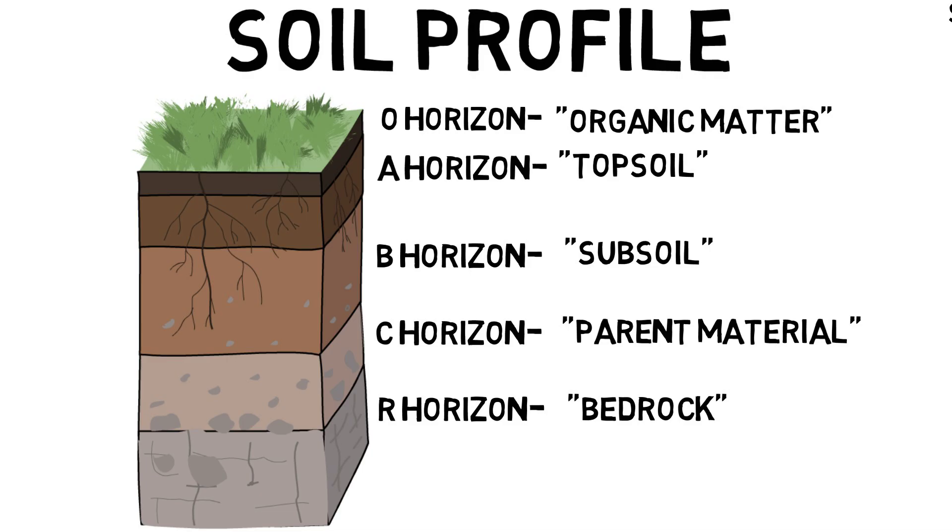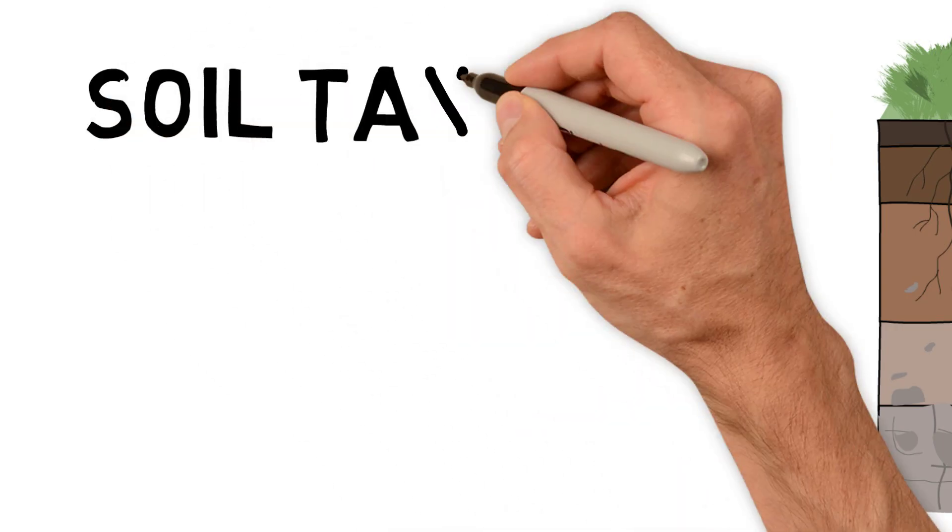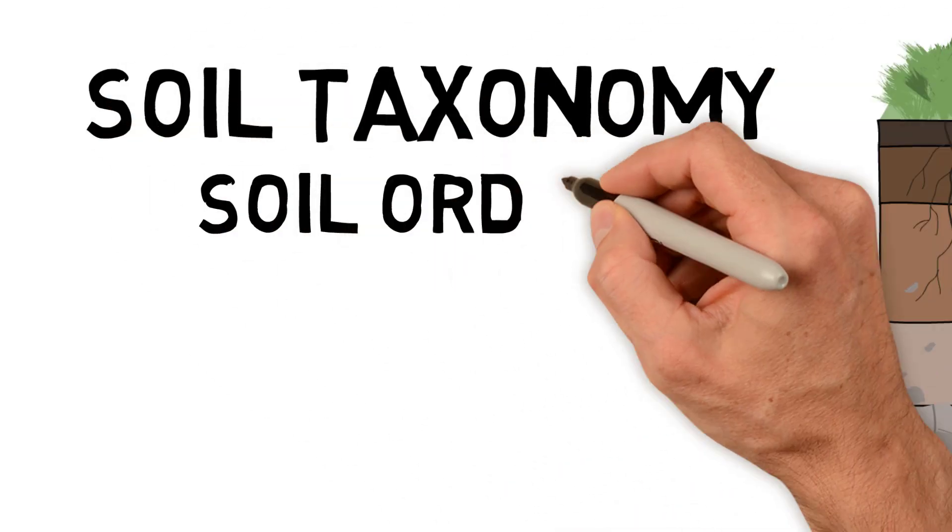And of course, there are many, many different types of soils. Just imagine going on a road trip anywhere. It doesn't even need to be across the country. It could be within your own state or your own city. You'll notice soils that have different colors or support different plants, or just have different qualities in general. At the very top of soil classification or soil taxonomy, there are 12 soil orders.